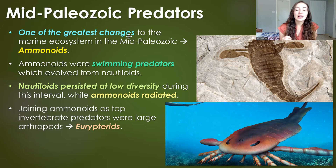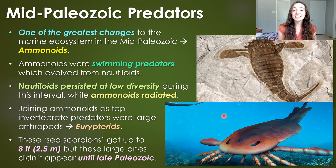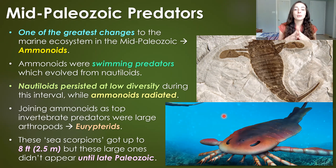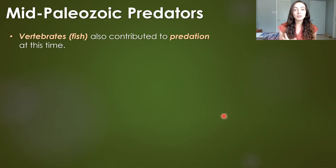Joining ammonoids and nautiloids as top invertebrate predators were the eurypterids — basically sea scorpions. These sea scorpions got up to 8 feet or 2.5 meters in length, but the ones around during the mid-Paleozoic Silurian and Devonian were much smaller, around a foot to two feet. The larger ones evolved in the later Paleozoic when oxygen rose in the Carboniferous. But even the smaller mid-Paleozoic versions would not be something you'd want to encounter.